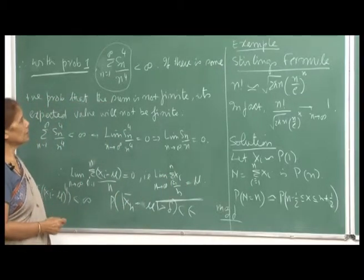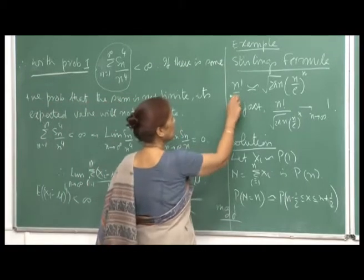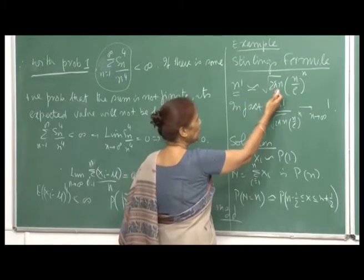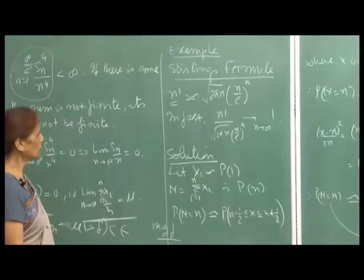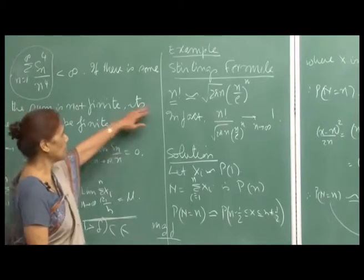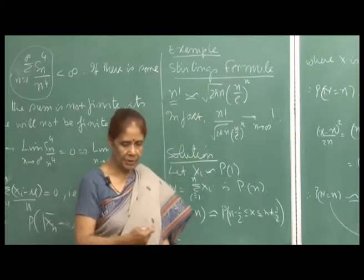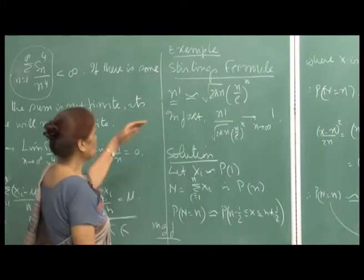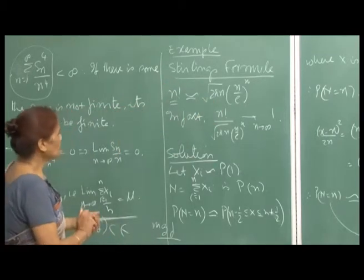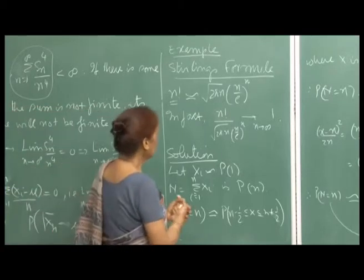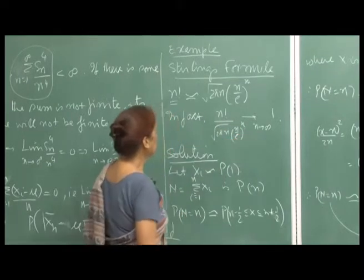Now let us look at Stirling's formula. We know that n! can be approximated by sqrt(2πn) · (n/e)^n. In other words, n! / (sqrt(2πn) · (n/e)^n) → 1 as n → ∞. This is very useful for approximating factorials in limiting situations.